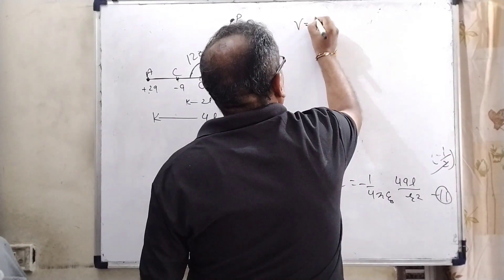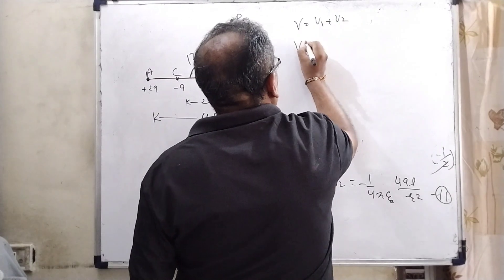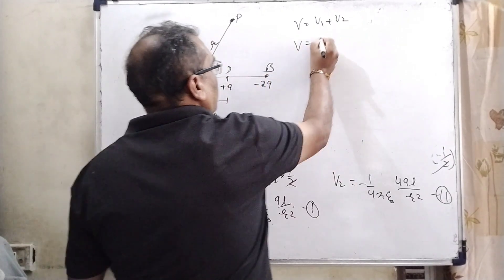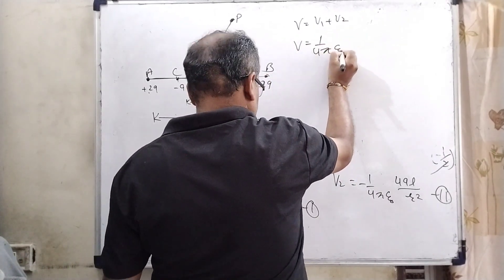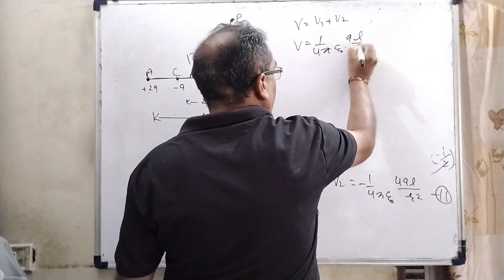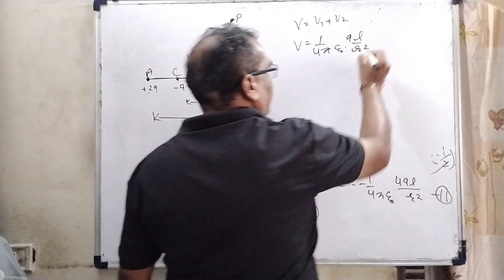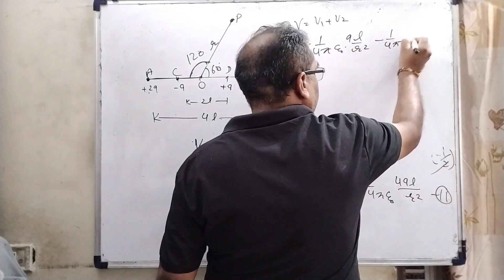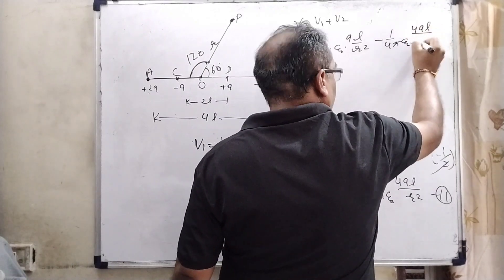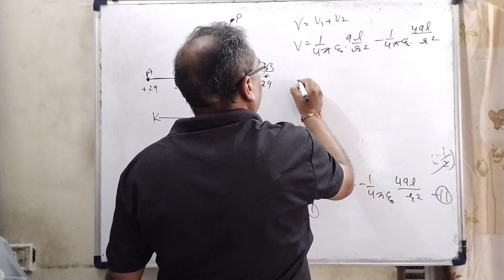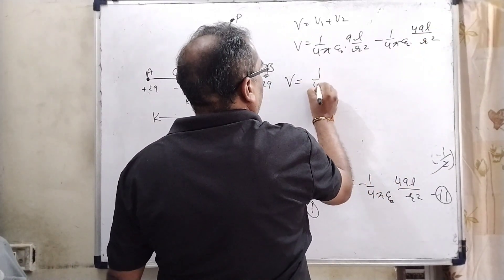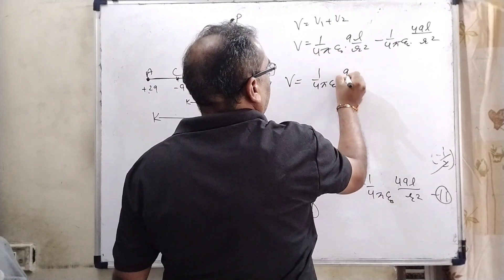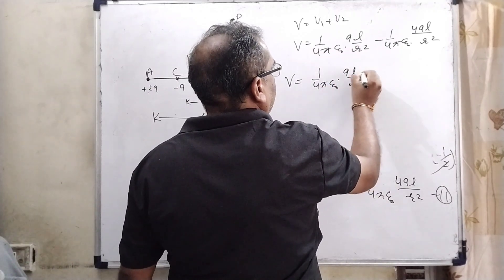So, net potential that is V equals V1 plus V2. Now, what is V1? Here 1 upon 4 pi epsilon 0 QL by R square and V2 is minus 1 upon 4 pi epsilon 0, 4 QL by R square.